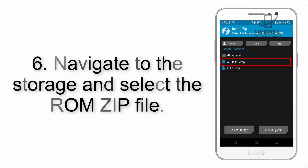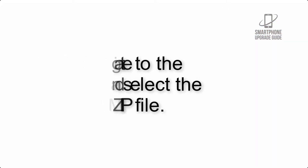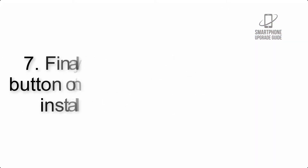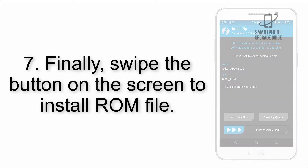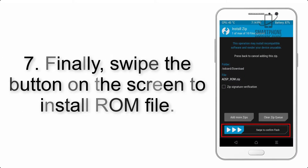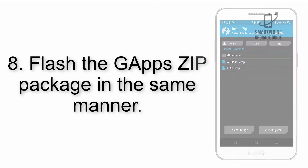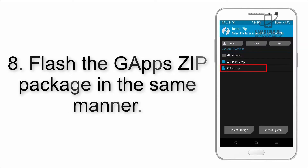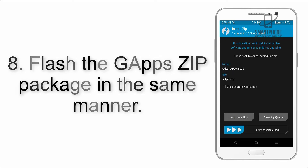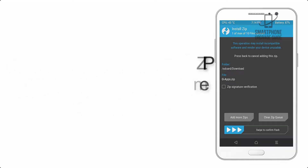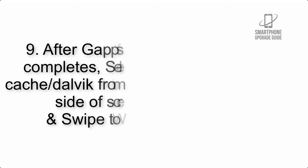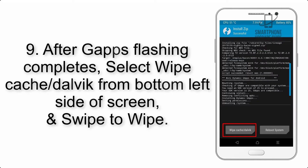Step 5: go back to the recovery main screen and tap on the Install button. Step 6: navigate to the storage and select the ROM zip file. Step 7: swipe the button on the screen to install the ROM file.